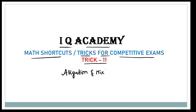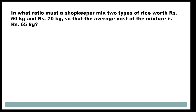This trick will help save time in every competitive exam. Let's look at the trick: In what ratio must a shopkeeper mix two types of rice worth 50 per kg and 70 per kg, so that the average cost of the mixture is 65 per kg?